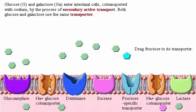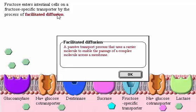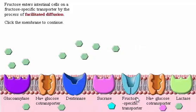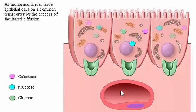Fructose enters intestinal cells on a fructose-specific transporter by the process of facilitated diffusion. All monosaccharides leave epithelial cells on a common transporter by the process of facilitated diffusion.